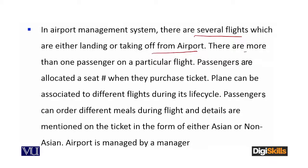On one flight, more than one passenger can be there. I have made a scenario where it may be possible that there is no passenger or there is one passenger. Passengers are allocated a seat number when they purchase a ticket — so when passengers purchase a ticket, they get a seat number.